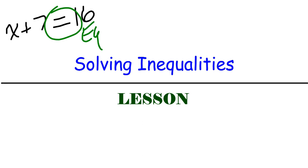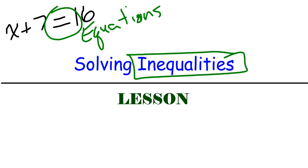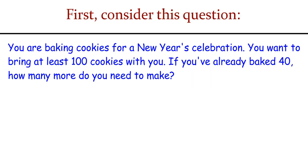What we do to solve equations can translate into inequalities. To understand the difference between equations and inequalities, consider this scenario: you're baking cookies for a New Year's celebration and want to bring at least 100 with you because it's going to be a massive celebration. If you've already baked 40, how many more do you need to make?